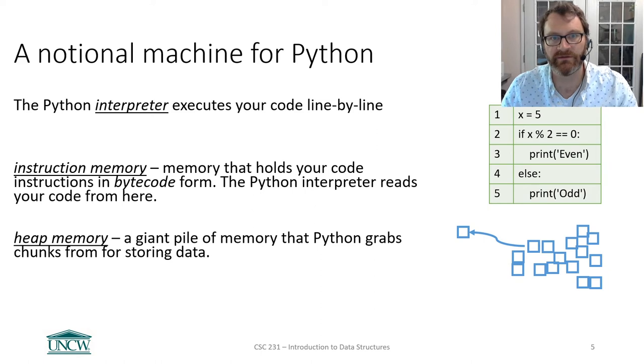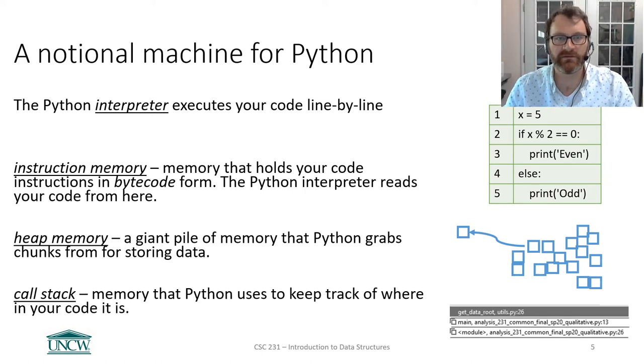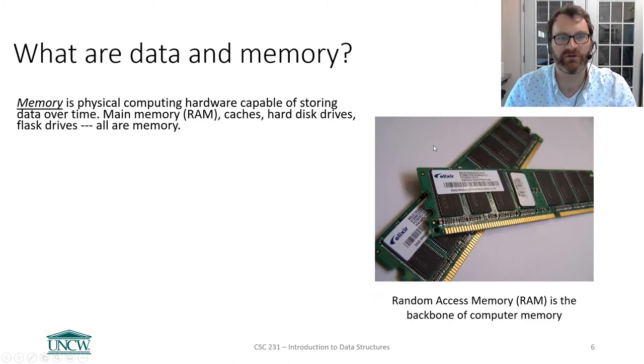The final component to our notional machine for Python is called the call stack. The call stack is what Python uses to keep track of where in your code it is. We're not going to go deep into the call stack right now. We're going to come back to it later. It's going to be a really important concept. But for now, I just want you to have in your head this notion of instruction memory. This is where Python copies your code. This notion of heap memory, where Python goes in the computer to store values or get some scratch space to store values. And then there is the call stack, and that's what Python uses to keep track of where it is in your code.